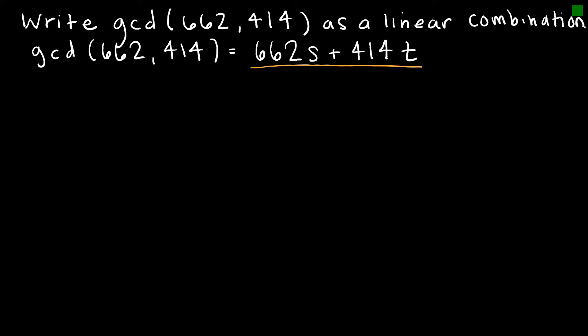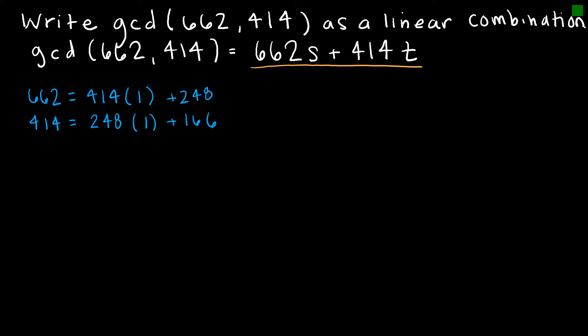It's a longer process, but we're going to go through it together. It starts with the Euclidean algorithm. I'm going to start with 662 and write that as 414 times some number plus a remainder — in this case, times 1 plus 248. Then I'll do the same for 414: how many times does 248 go into 414 evenly? One time with 166 left over.